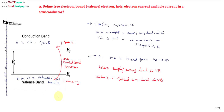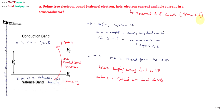Now we will see what is meant by electron current and hole current. Electron current means movement of electrons — strictly speaking, free electrons, that is electrons in the conduction band. Movement of electrons in the conduction band results in a current, and that current is called electron current.